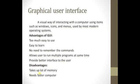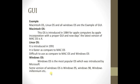GUI is too easy to use, easy to learn, no need to remember commands, and provides a better interface to the user. However, it has some disadvantages: it takes up a lot of memory, and it needs a faster computer. All the faster computers are required for graphical user interface. Examples of GUI include the Mac operating system and Linux operating system.